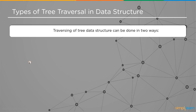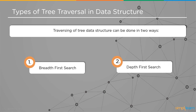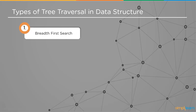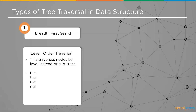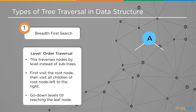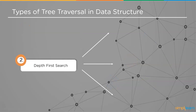Tree traversal can be done in two ways: Breadth First Search (BFS) and Depth First Search (DFS). In BFS we follow level order traversal — traversing nodes by level instead of subtrees. We first visit the root node, then the left subtree, then the right subtree, and continue until all leaf nodes of the entire tree are found.